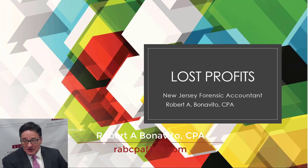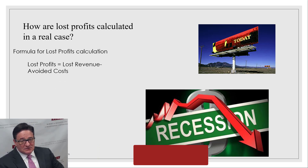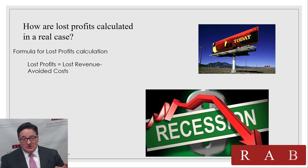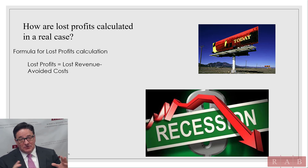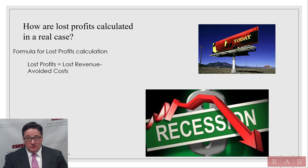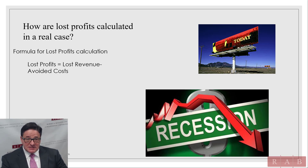The formula for calculating lost profits is: lost profits equals lost revenues minus avoided costs. That's the formula. When we have an engagement, the first thing we do is go in and do a cost analysis — what are the variable costs, what are the fixed costs, what are the semi-variable costs? We do this because once we calculate the revenues, we can then calculate and subtract the avoided costs. That is their lost profits.